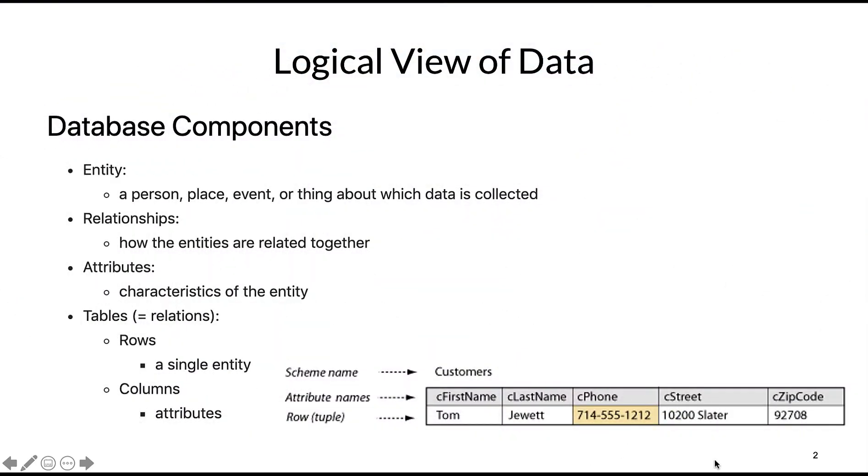Hello everyone, welcome to week two. Let's review some database components from last week. We have entity - an entity can be a person, a place, an event. We have relationships, which is how the entities are related together.